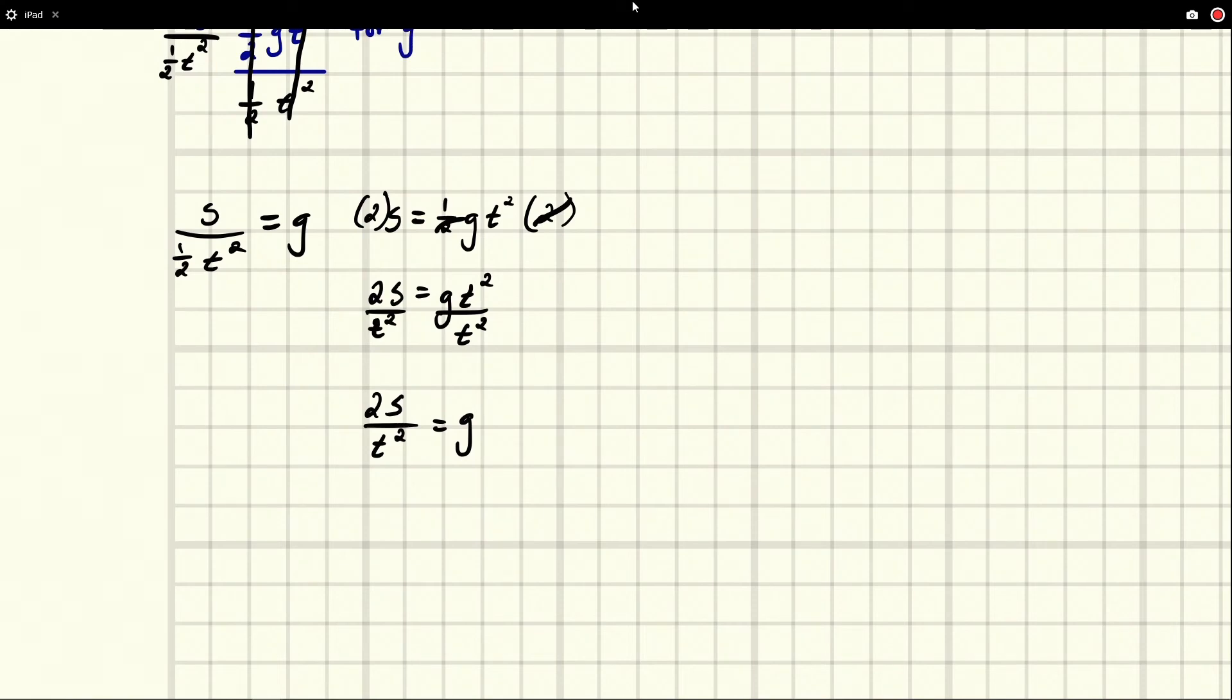So if I actually multiply by two over two, this is the same thing as one, right? Because two divided by two is one, and anything times one is itself.